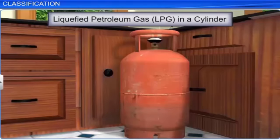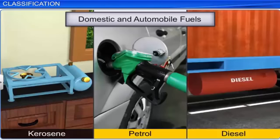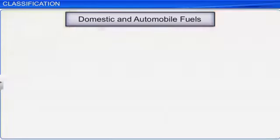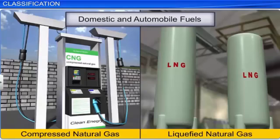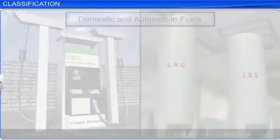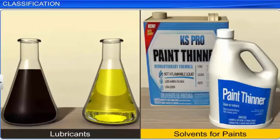Liquefaction of petroleum gas renders a very useful domestic fuel in the form of LPG. Kerosene oil is also used as a domestic fuel, but it is more polluting as compared to LPG. Petrol and diesel are also used as automobile fuels. Among the automobile fuels used, CNG or LNG are the clean, non-polluting fuels. Other higher hydrocarbons are used as lubricants, solvents for paints, and so on.